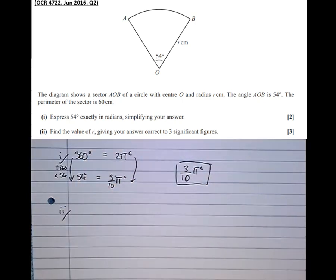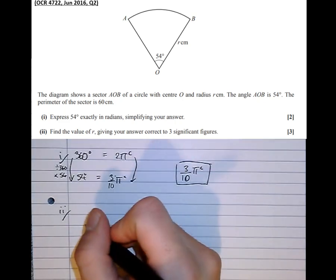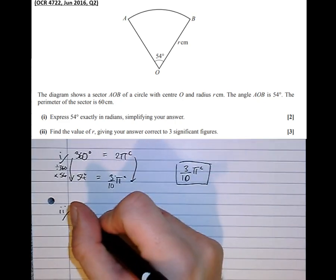Part 2. Find the value of R, given your answer correct to 3 significant figures. Well it's told us the perimeter of the sector is 60 centimeters. So that's obtained by adding together the 2 radii.